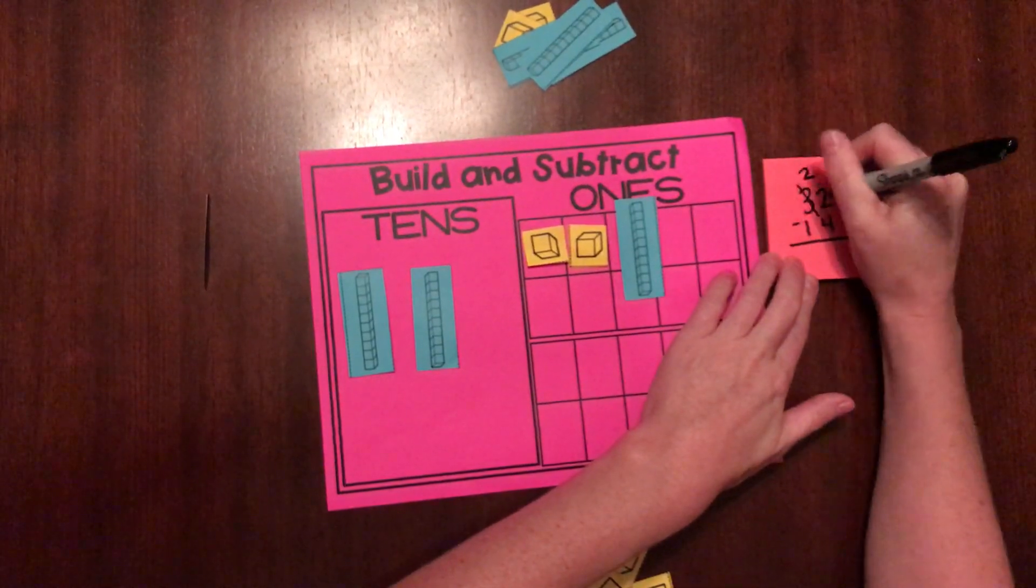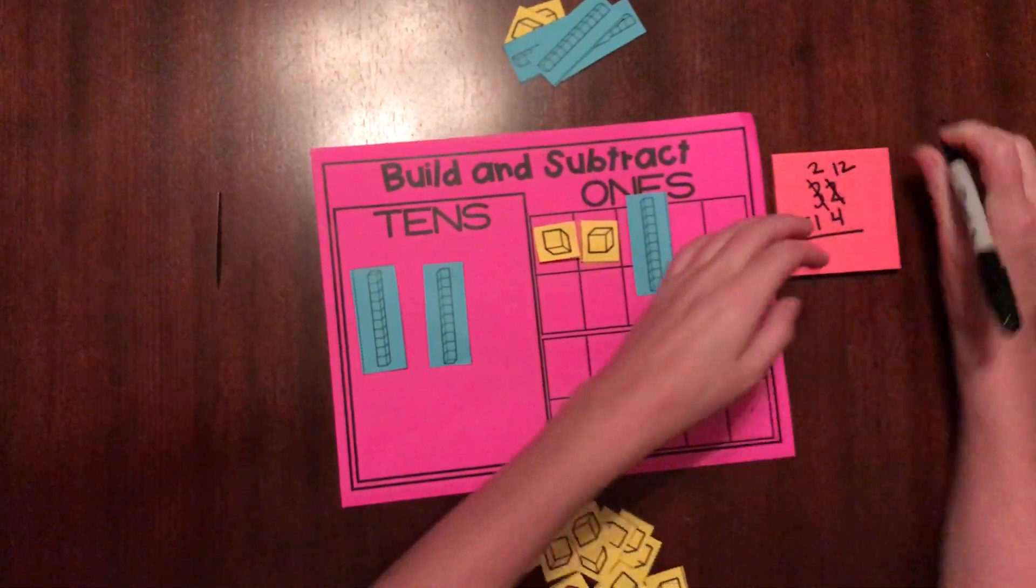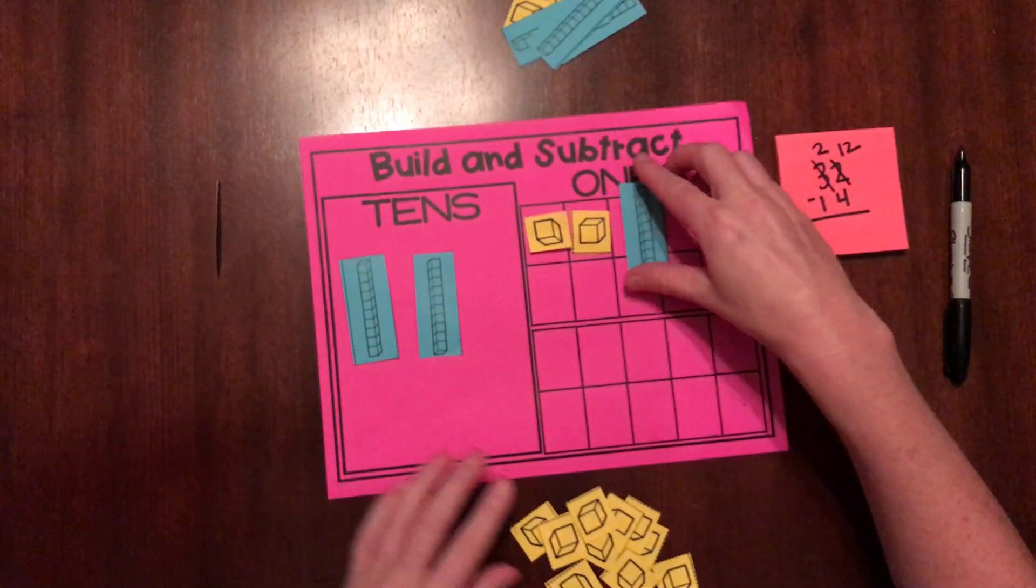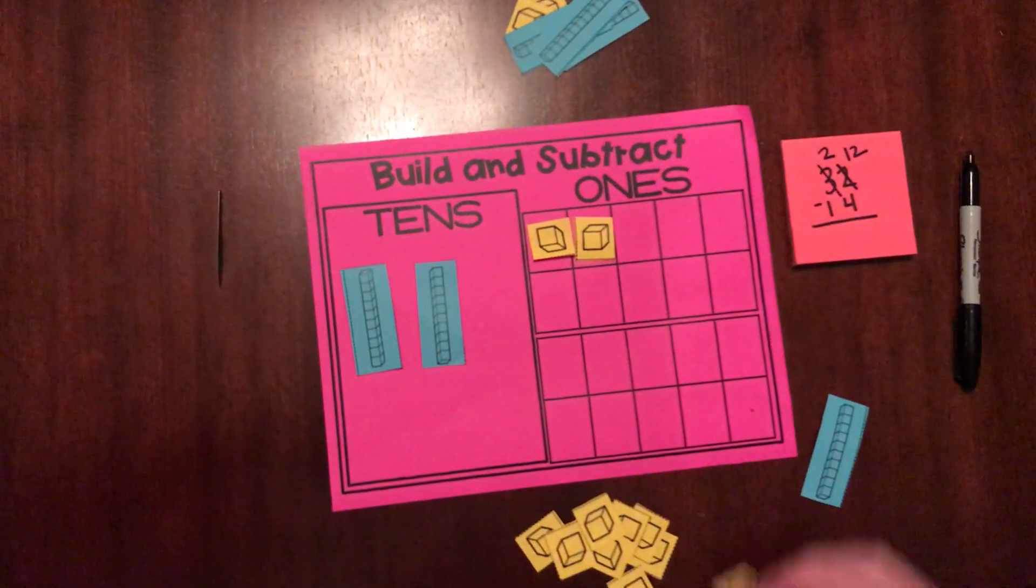Now I have two tens and I have 12 in my ones place. The only problem is I can't have tens in my ones place. They don't belong there. So I'm going to trade this for ten ones.